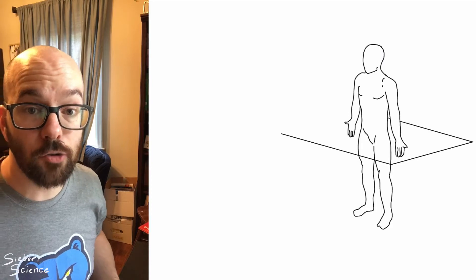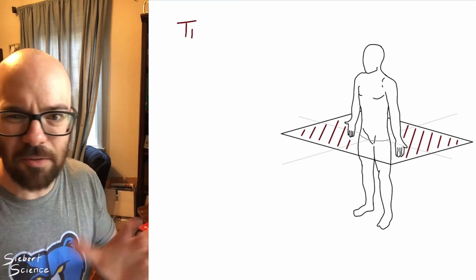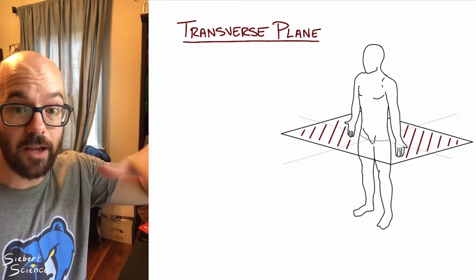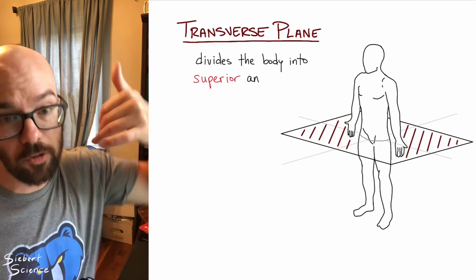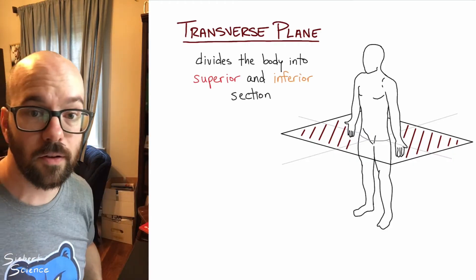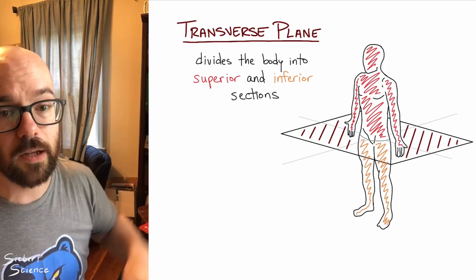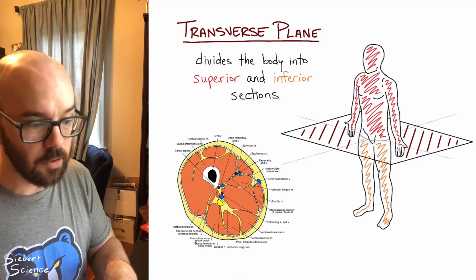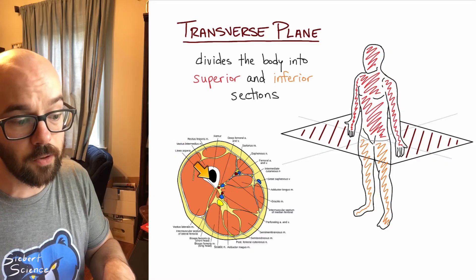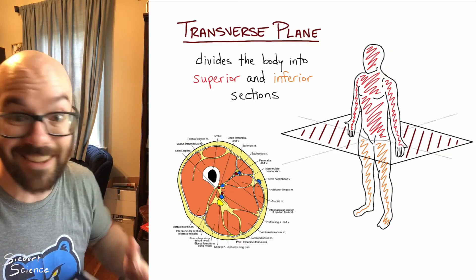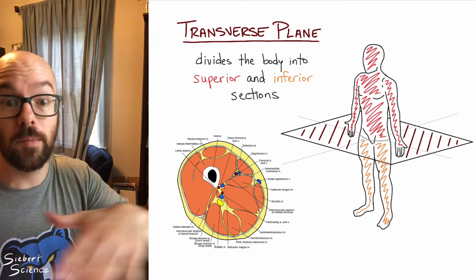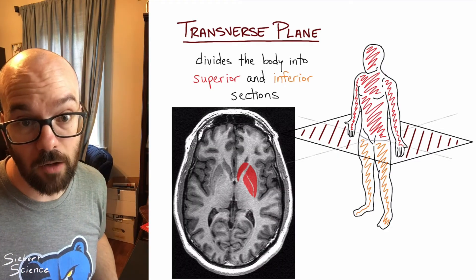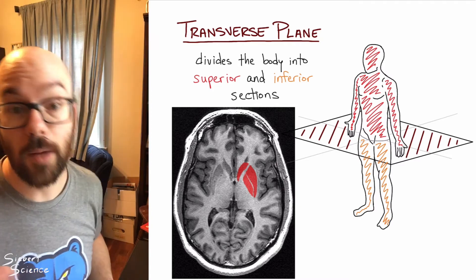Finally, we have the transverse plane. You know it's transverse anytime the image doesn't really look like a human. The transverse plane cuts across and divides the body into superior and inferior parts — superior in red and inferior in orange. Here's a transverse cross-section of the leg: we see the skin, hypodermis, muscles, and bone — it doesn't look like the outline of a human, so it's transverse. Here's another example: a transverse MRI cross-section of the brain.